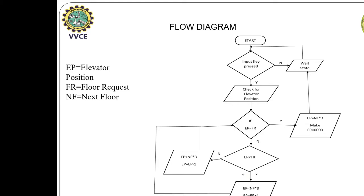In the floor chart, EP represents the elevator position, FR represents the floor request, and NF represents the next floor. When an input key is pressed, if there is no valid key or an invalid input, the elevator remains in the wait state until a valid key is pressed. When a valid key is pressed, it checks the elevator position. If the elevator position equals the requested floor, it acknowledges the floor request and enters the wait state.